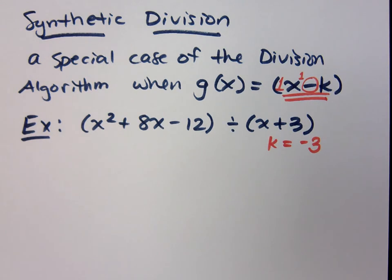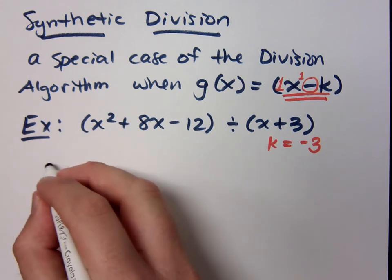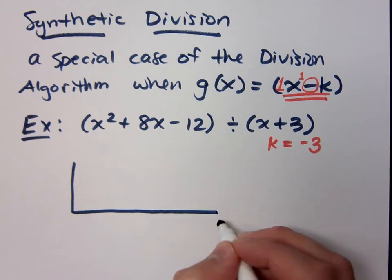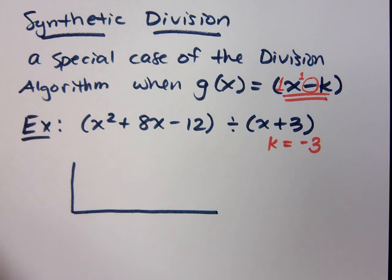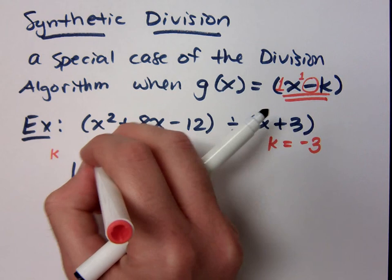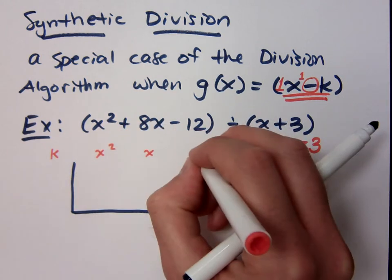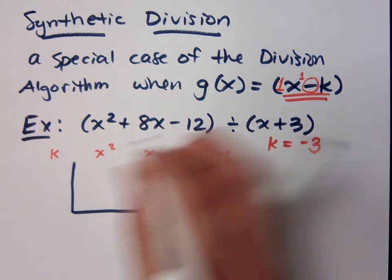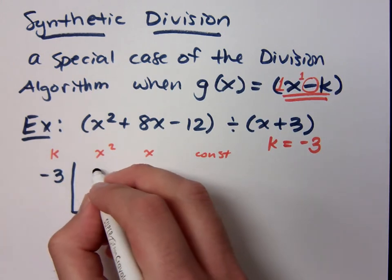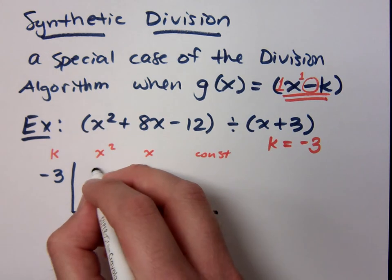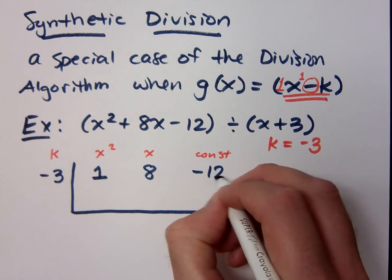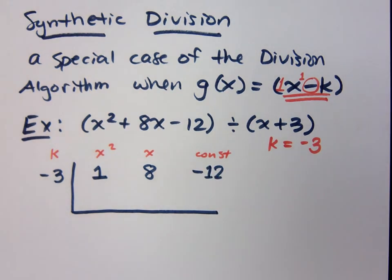Now, just watch me how I set this up. My synthetic division is set up just a little bit differently than the book sets theirs up. The k goes out here, and I'm going to put the coefficients of my polynomial inside here. So, my k is negative 3. My coefficients are the coefficient of x squared, coefficient of x, and the constant.